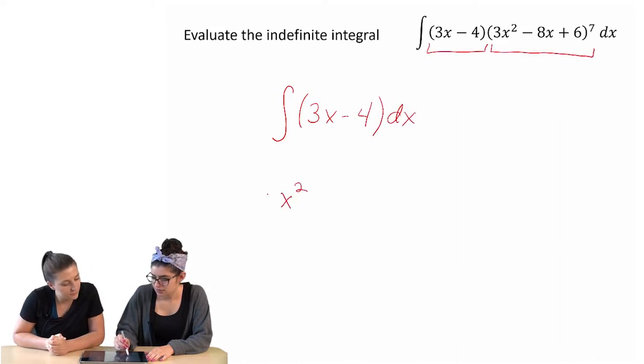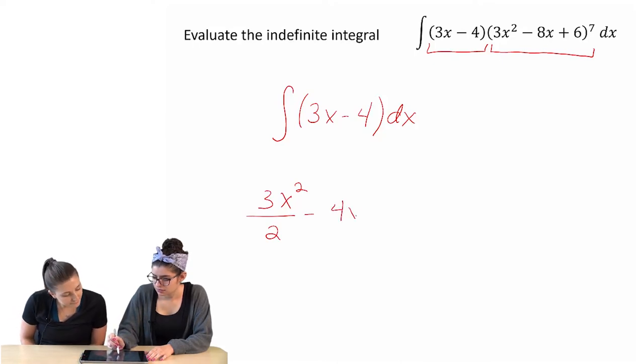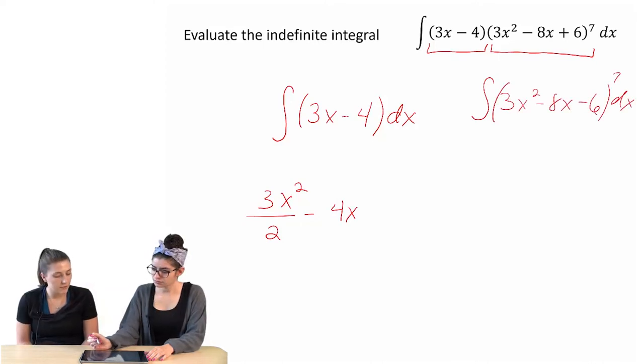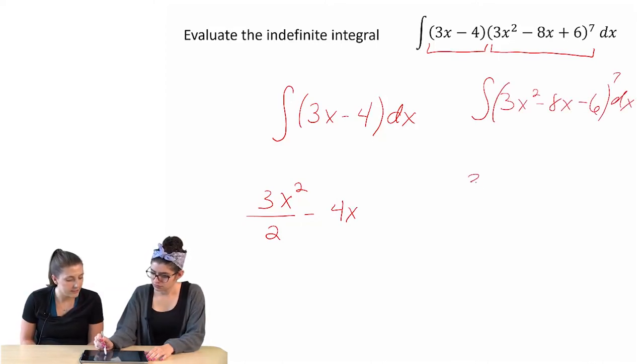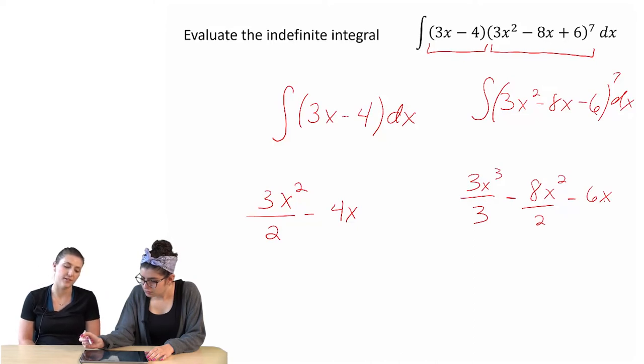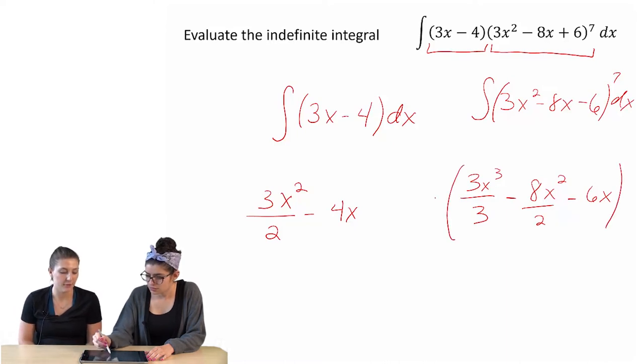We have an x squared. 3x squared over 2. Minus 4x? Yeah. Okay, and the other one would give us 3x to the third over 3, right? Mm-hmm. Oh, but then we have that whole thing to the seventh. So maybe make a whole parentheses set around it and then raise it to the eighth and put it over 8.